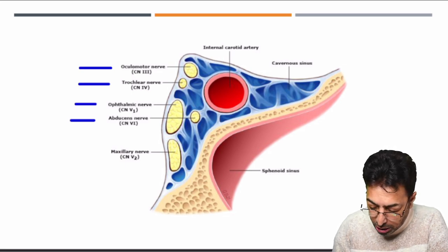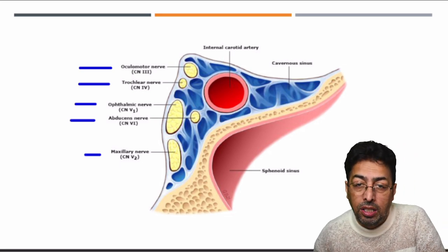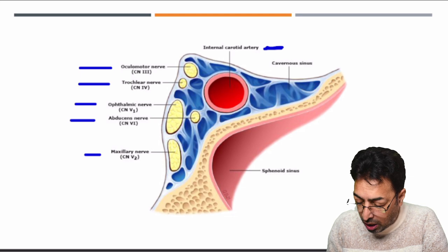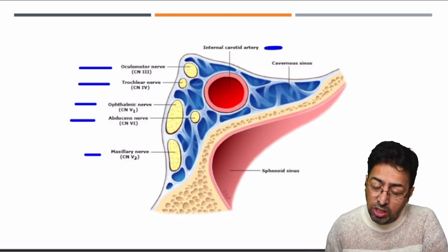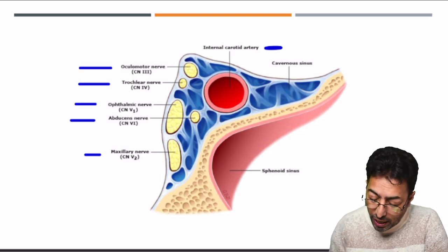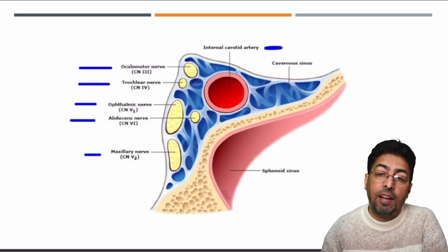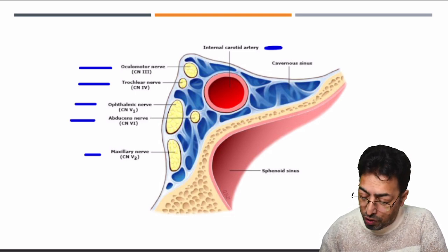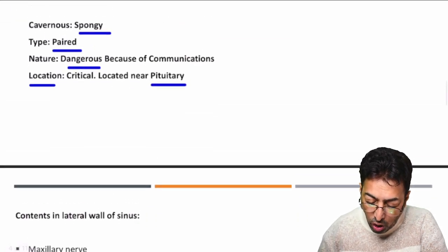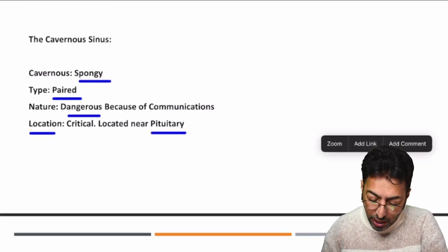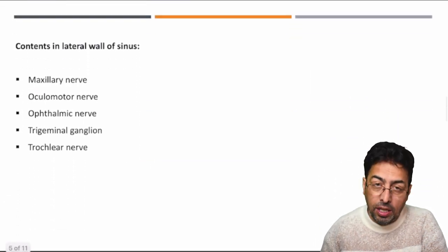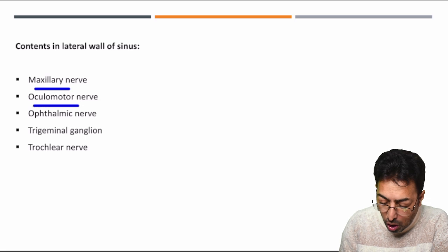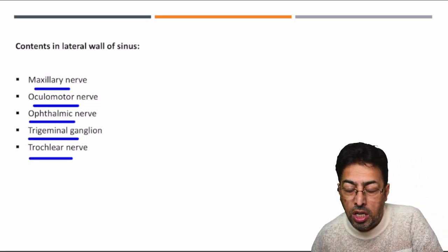In addition to CN 3, 4, and 6, the ophthalmic division and maxillary division of the trigeminal nerve also lie within the lateral wall of the cavernous sinus. So four important nerves lie in the lateral wall. The internal carotid artery lies within the substance of the cavernous sinus, and more specifically, the abducens nerve also lies within the substance rather than the lateral wall.